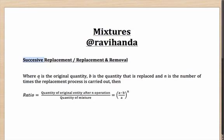This essentially happens when A is an original quantity, B is the quantity that is replaced, and N is the number of times the replacement process is carried out. Think about it this way: you have a big jar containing a lot of milk. You take out some amount of milk and replace it with water, then repeat this process N times. The final ratio of the original entity to the total mixture is given by ((A minus B) divided by A) to the power of N.